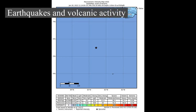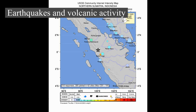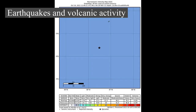Earthquakes and volcanic activity: Earthquakes often occur in volcanic regions, caused by both tectonic faults and the movement of magma in volcanoes. Such earthquakes can serve as an early warning of volcanic eruptions, as during the 1980 eruption of Mount St. Helens. Earthquake swarms can mark the location of flowing magma, and can be recorded by seismometers and tiltmeters — devices that measure ground slope — used as sensors to predict imminent eruptions.